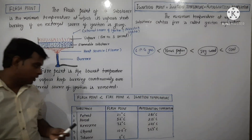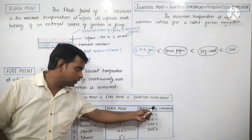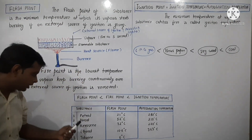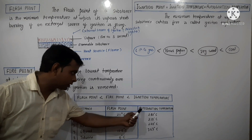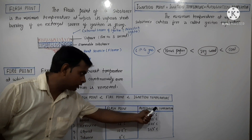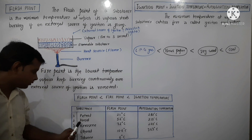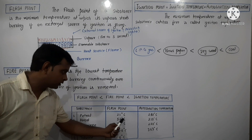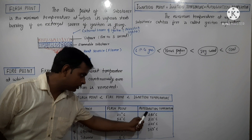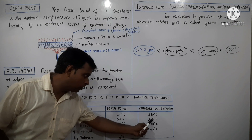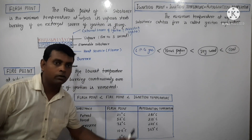Here is some data on fuel flash points and auto-ignition temperatures. Petrol has a flash point of 21 degrees Celsius and an auto-ignition temperature of 280 degrees Celsius. Diesel has a flash point of 52 degrees Celsius and an auto-ignition temperature of 210 degrees Celsius.